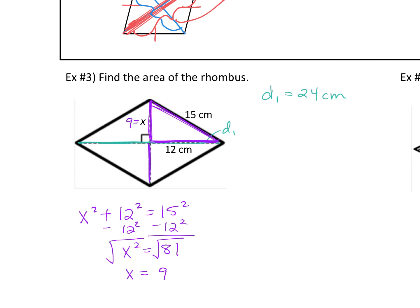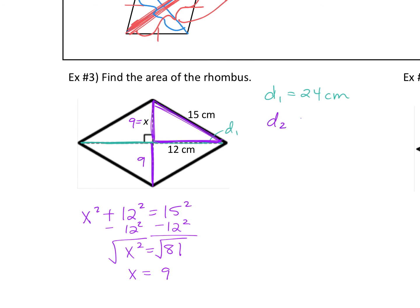So if I know my formula, area equals one half times diagonal one times diagonal two, now it's just a matter of plugging those links in. So I'm going to say the area of this rhombus is one half times 24 times 18. And again, plug it into your calculator. One half times 24 times 18. And I get the area equals 216 square centimeters.